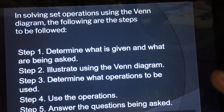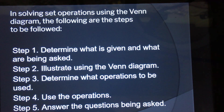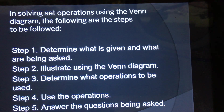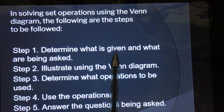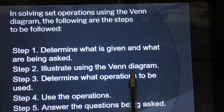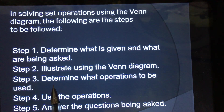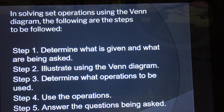These are the steps we will follow to solve word problems involving sets. Step one: determine what is given and what is being asked. Step two: illustrate using a Venn diagram. Step three: determine what operations to be used — whether union or intersection. Step four: use the operations and answer the question being asked.